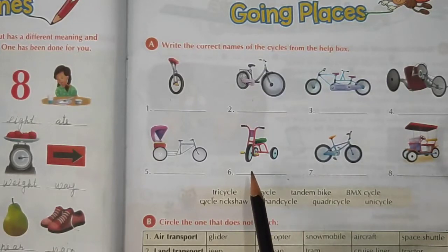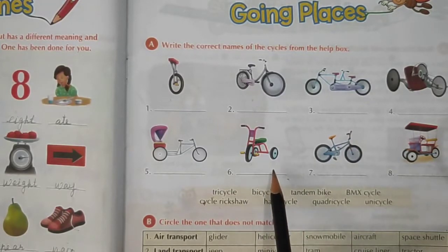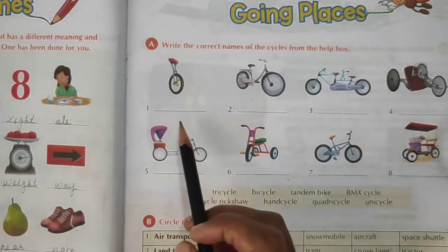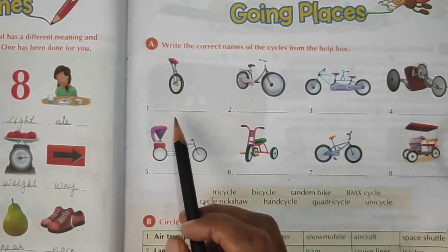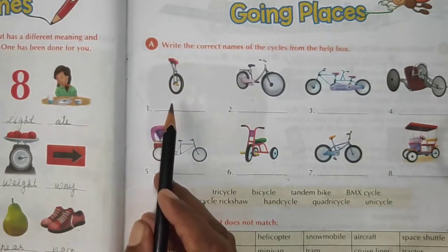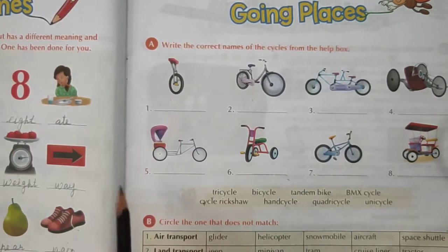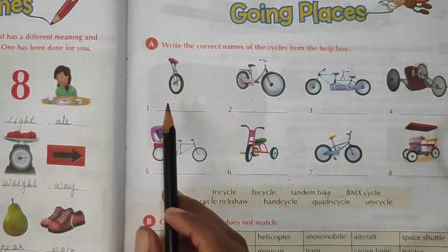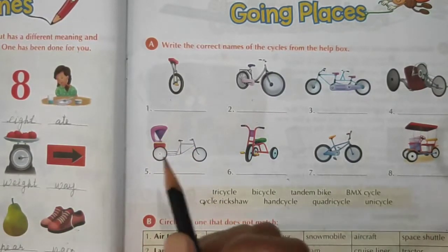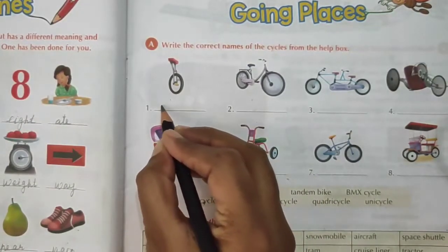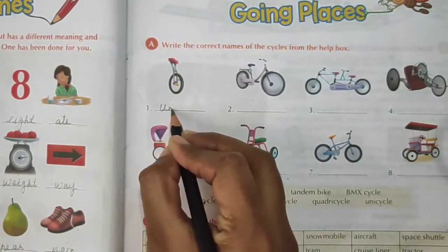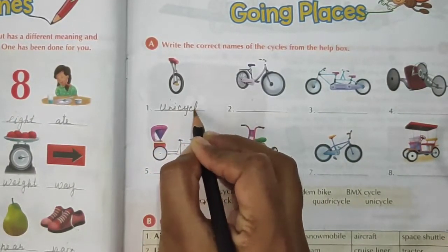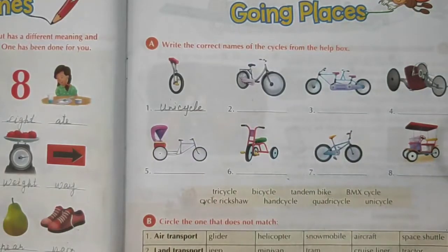Here we have to write the correct names of the cycles. See the first one — do you know the name of this cycle? It is unicycle. Unicycle, it has only one wheel. Write unicycle: U-N-I-C-Y-C-L-E.